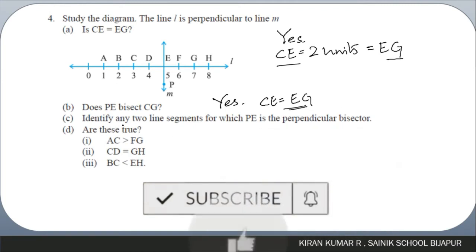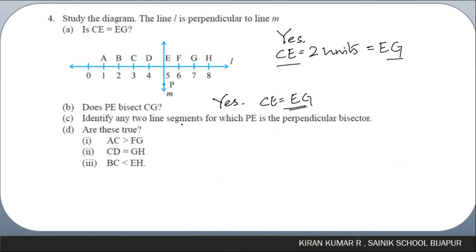Part C: identify any two line segments for which P is the perpendicular bisector. We can consider line segment BG and also line segment DF. You can have many more; those are just two examples.